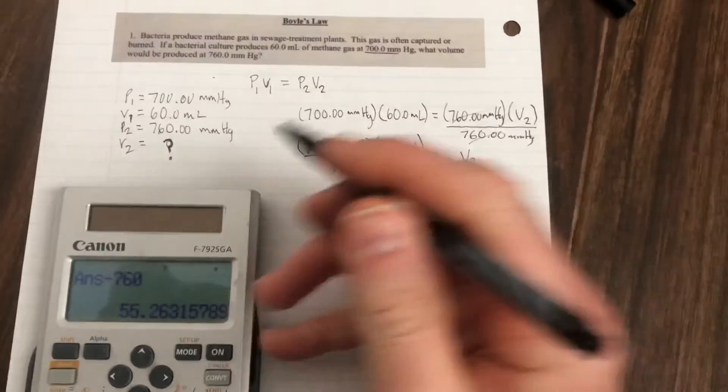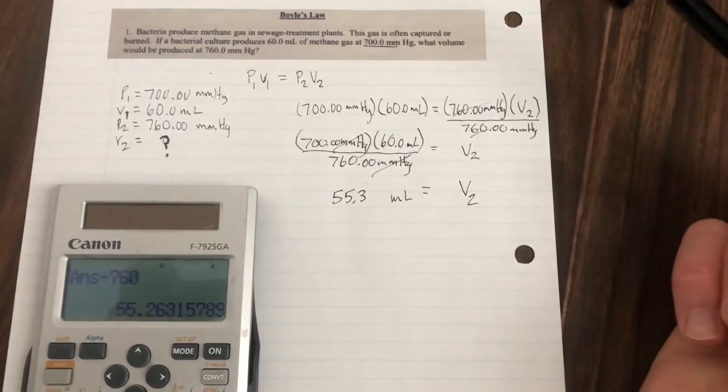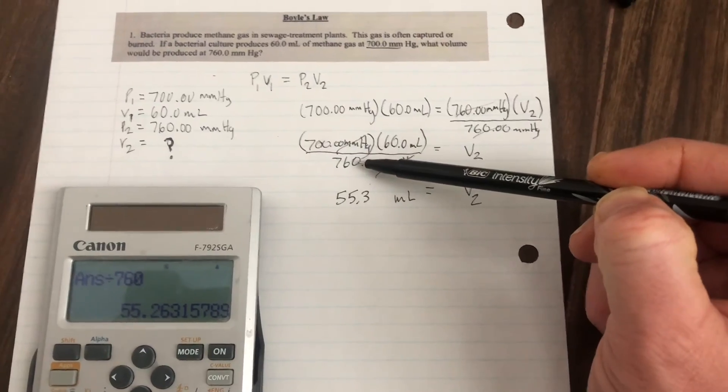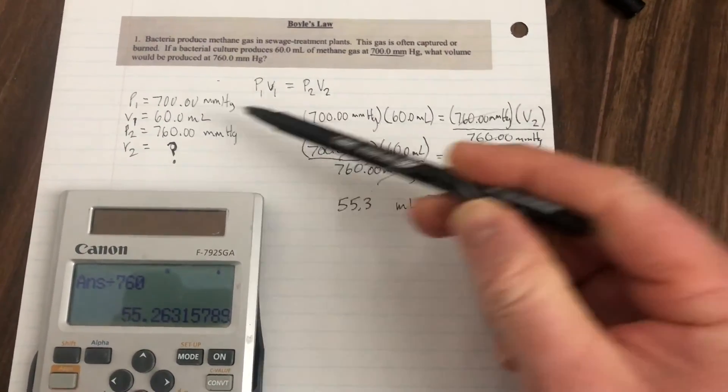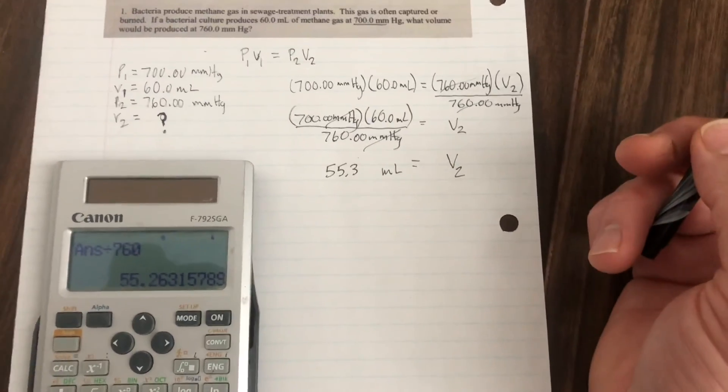So if you think about this logically, remember with Boyle's Law, there's an inverse relationship between the pressure and the volume of a gas. So if we've increased the pressure, then the volume should shrink. And you can see that it's gone from 60 mils down to 55. So that checks out.